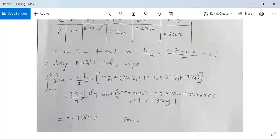This is equal to 2 times 0.1 by 45. Substitute the values of h, y₀, y₁, y₂, y₃, and y₄. Within bracket: 7.0000 (7 multiplied by 1.0000) plus 32 times 0.9975 plus 12 times 0.9900 plus 32 times 0.9776 plus 14 times 0.9604. After solution, you get the value 0.41835. So this is the value of this integration using Boole's rule.